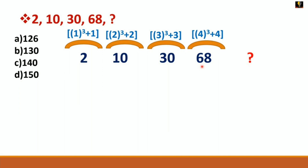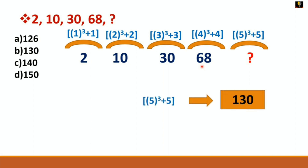So the next number is 5³ + 5 = 125 + 5 = 130. Your final answer is 130, which is option B.